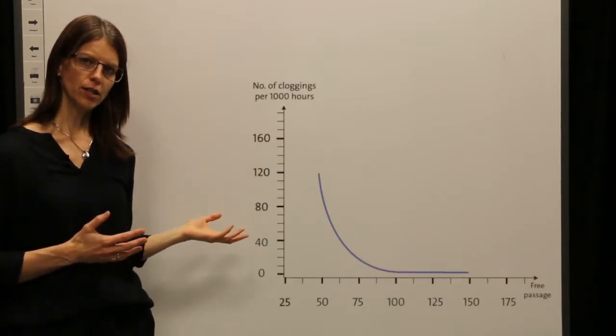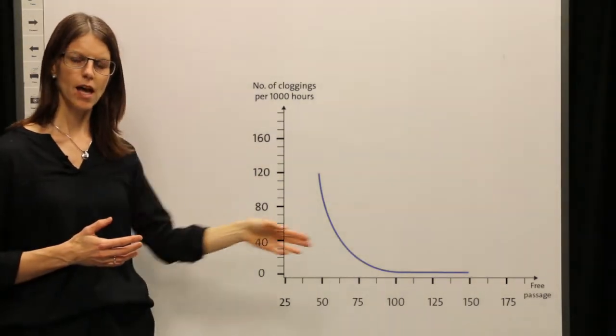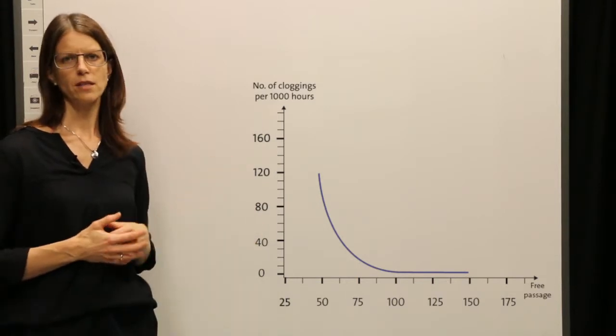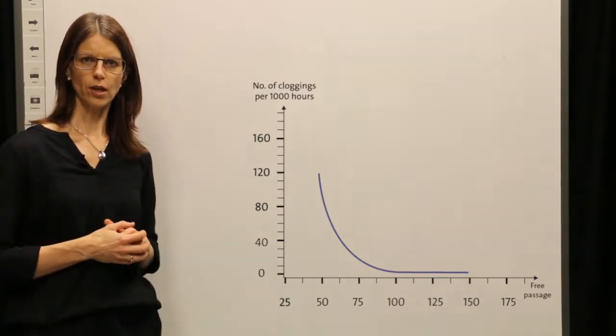Now let's look at the relation between clogging capabilities and free passage within the hydraulics. This illustration shows that the larger free passage you have, the lower the risk for clogging. Grundfos continuously optimizes the tube impeller and the vortex impeller to make wastewater installations as reliable as possible and keep downtime as low as possible.